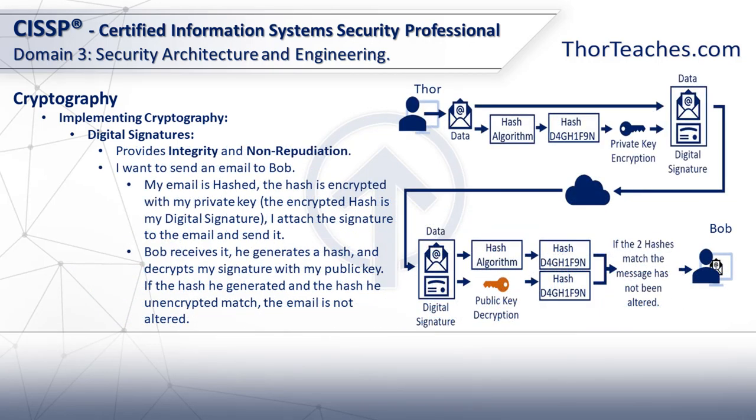Digital signatures provide integrity and non-repudiation. If I want to send an email to Bob and prove it came from me, and that the email has not been altered, my email would be hashed and that hash is then encrypted with my private key. Remember, this is not confidentiality — it's integrity. The hash encrypted with my private key is the digital signature. I would send the email along with the digital signature to Bob. Bob would then use the same hashing algorithm on the email, decrypt my digital signature with my public key, and check the two hashes against each other. If the two hashes match, Bob can safely assume the email came from me and has not been altered. That doesn't mean it wasn't intercepted — someone else could easily have read it. This is only integrity. I can then not later say I didn't send the email, because Bob can prove it was encrypted with my private key. Digital signatures provide integrity and non-repudiation.